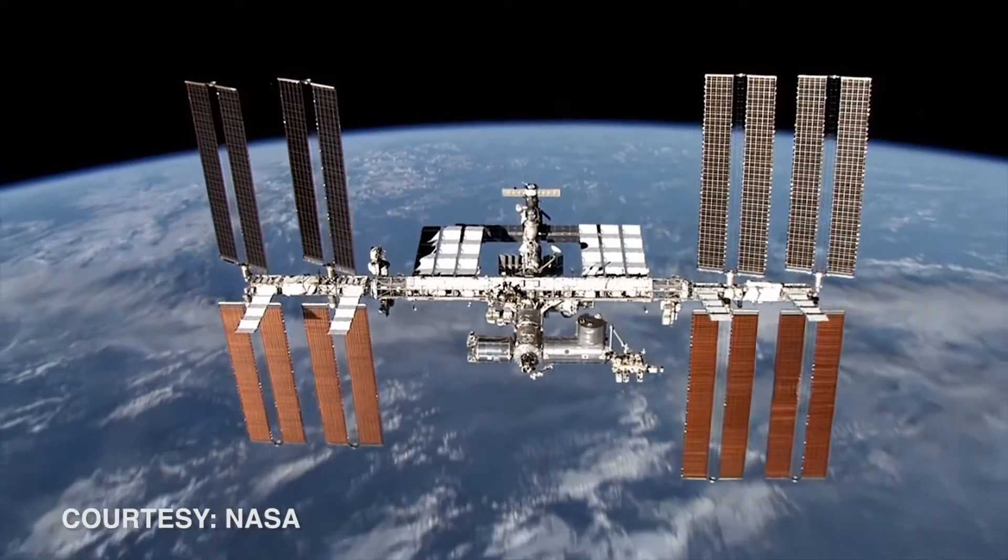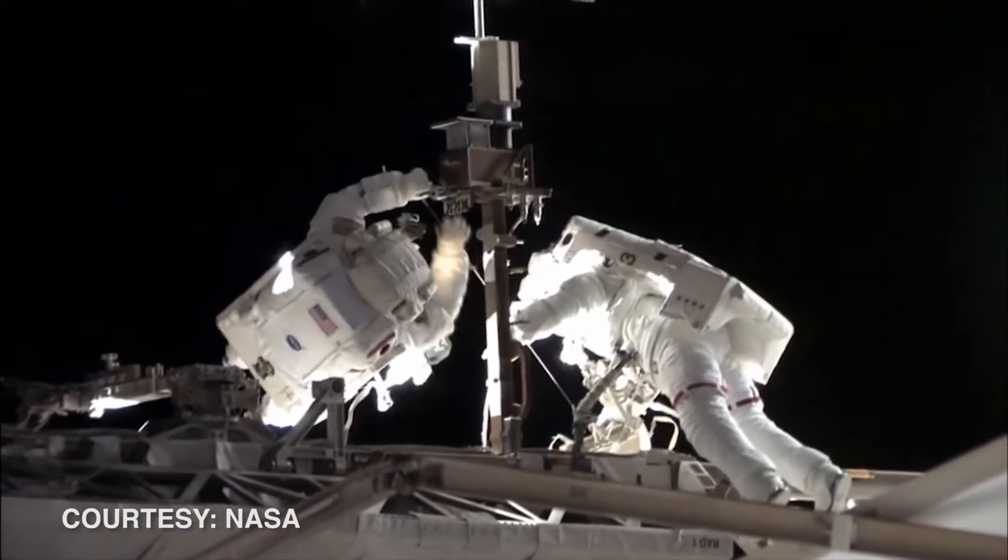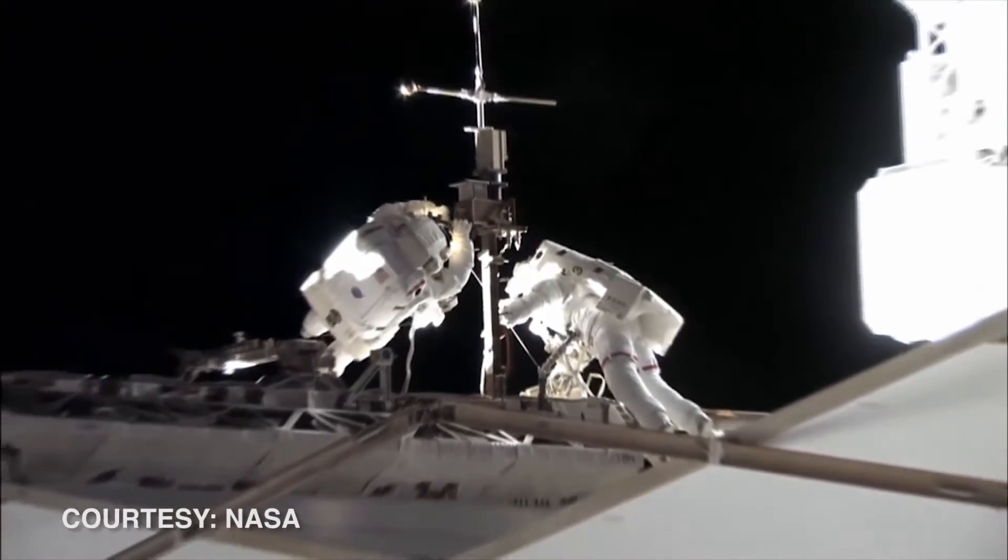Right now on the International Space Station, all electronics need a separate cooling system to keep them at their functional temperature. All the heat from the electronics is radiated into deep space and completely wasted.